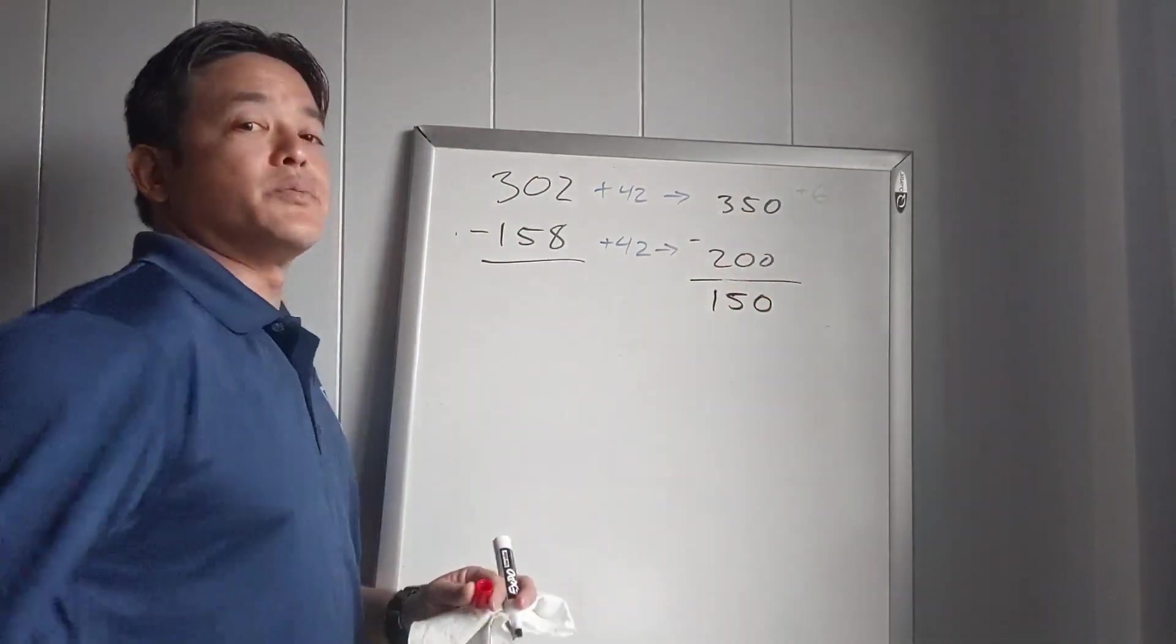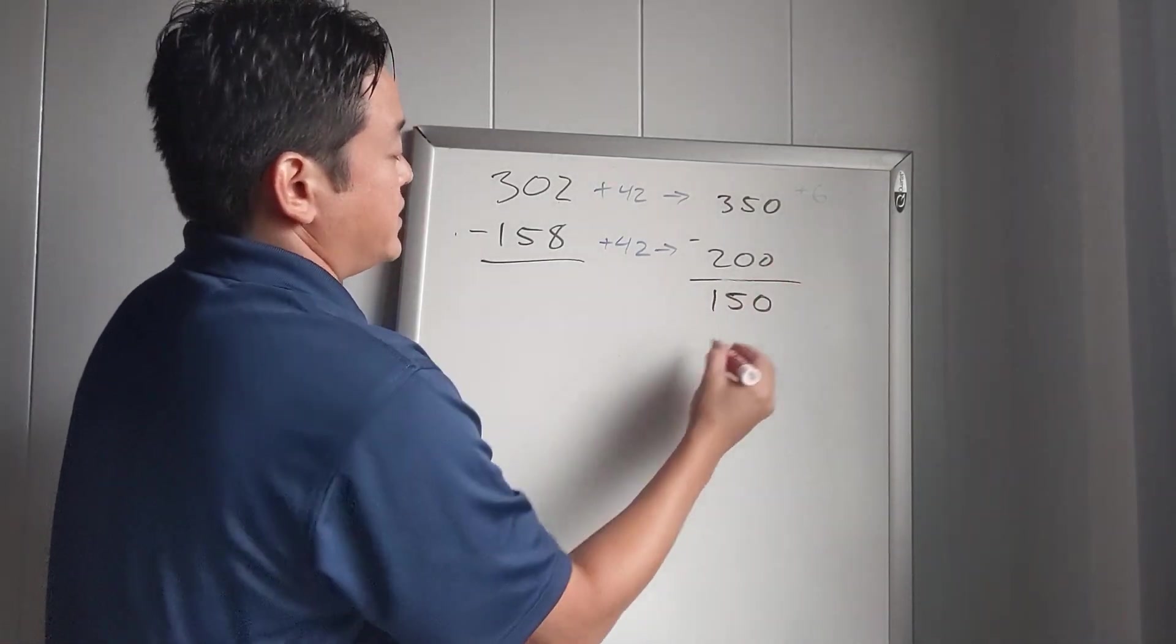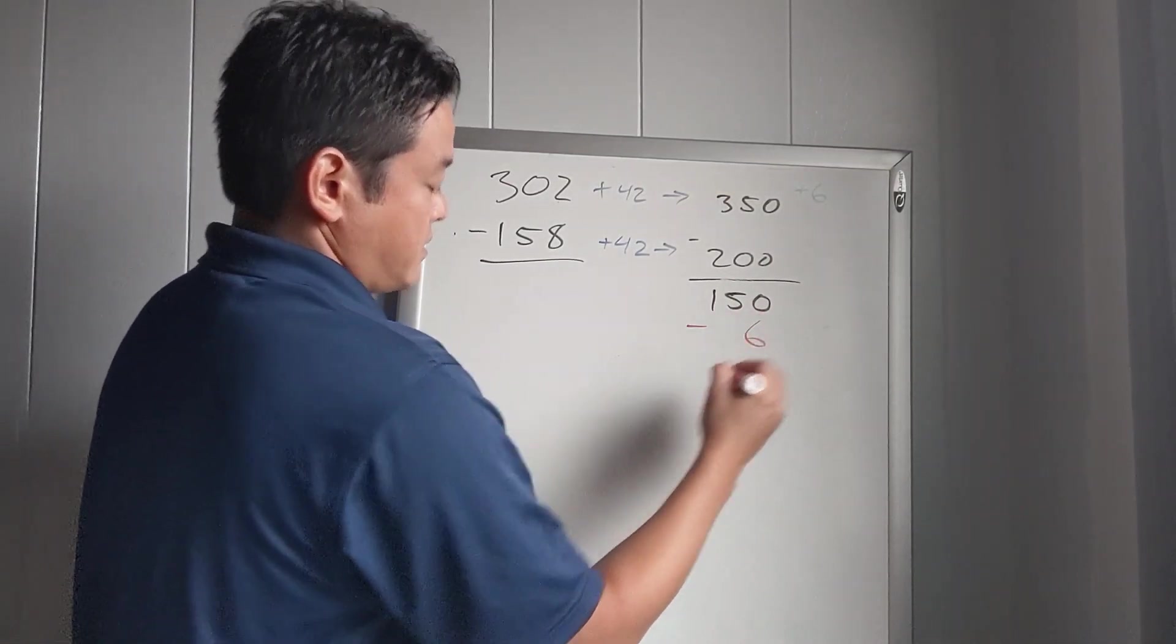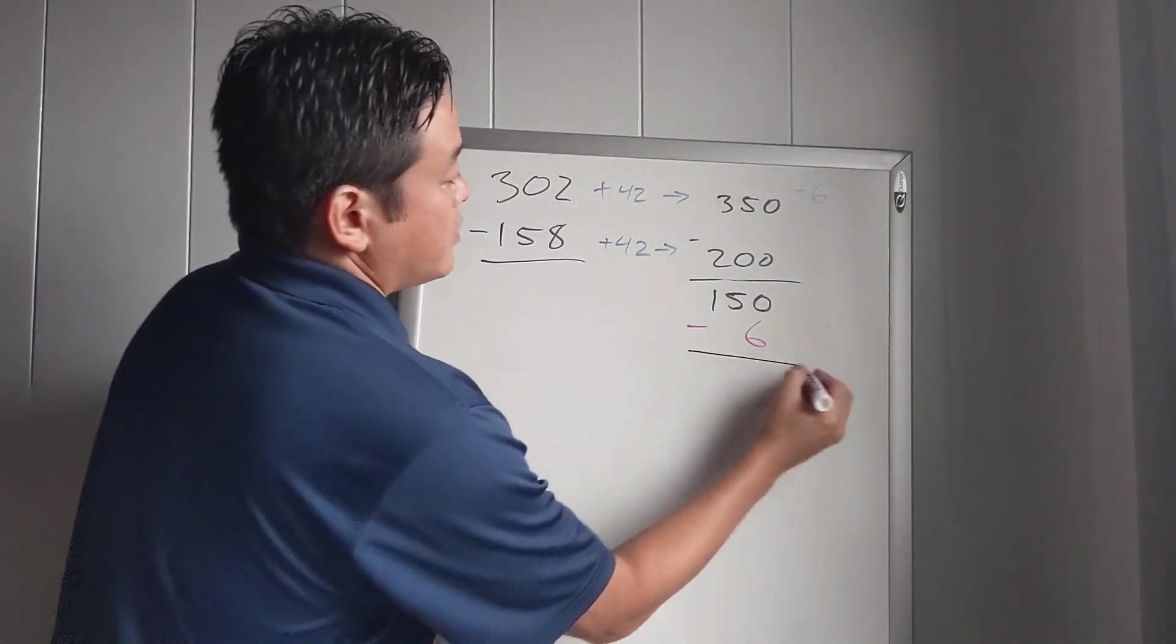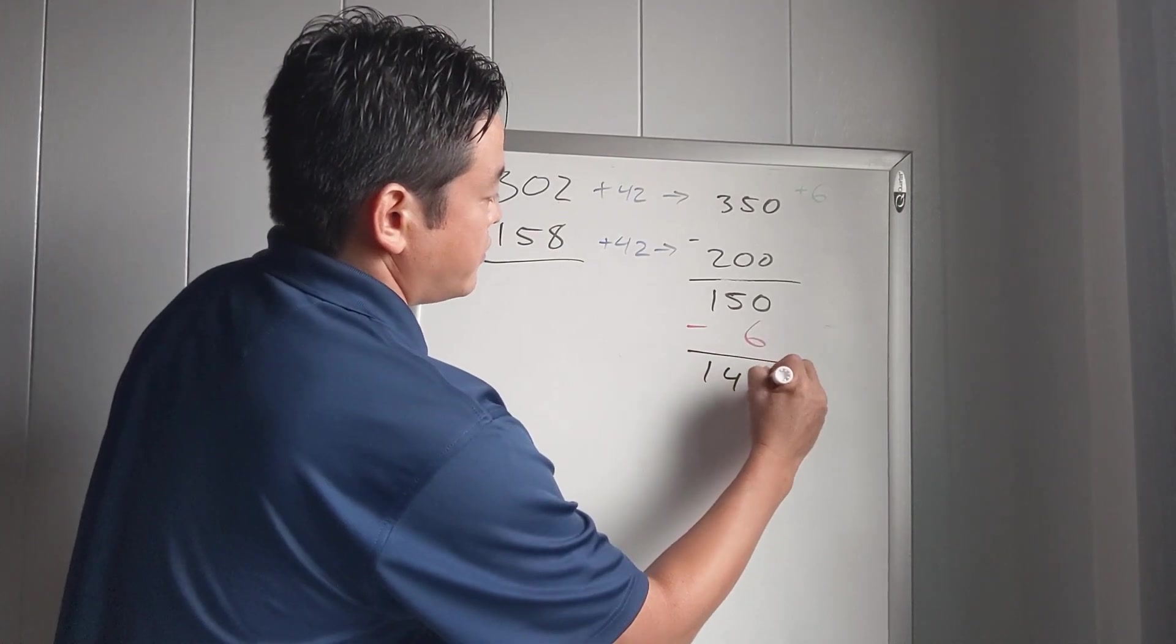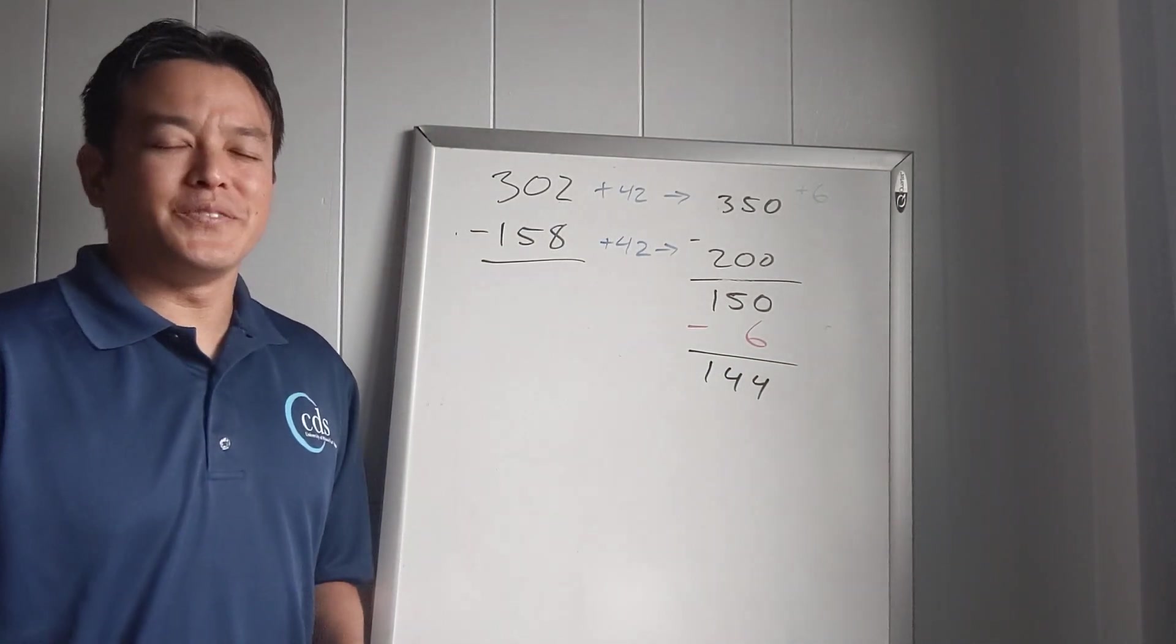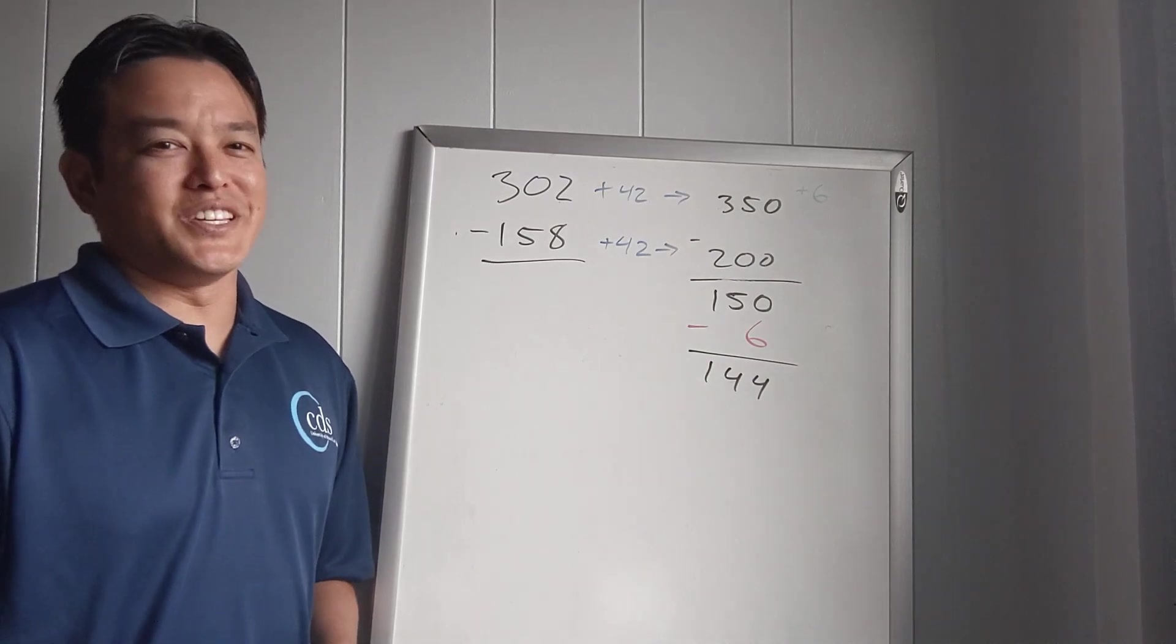And because we added 6 up here, we have to take away the 6 at the end because we didn't add 6 down here. So we're going to subtract 6, and 150 minus 6 is 144. So hope you learned something from this video. Good luck, have fun, and we'll see you next time.